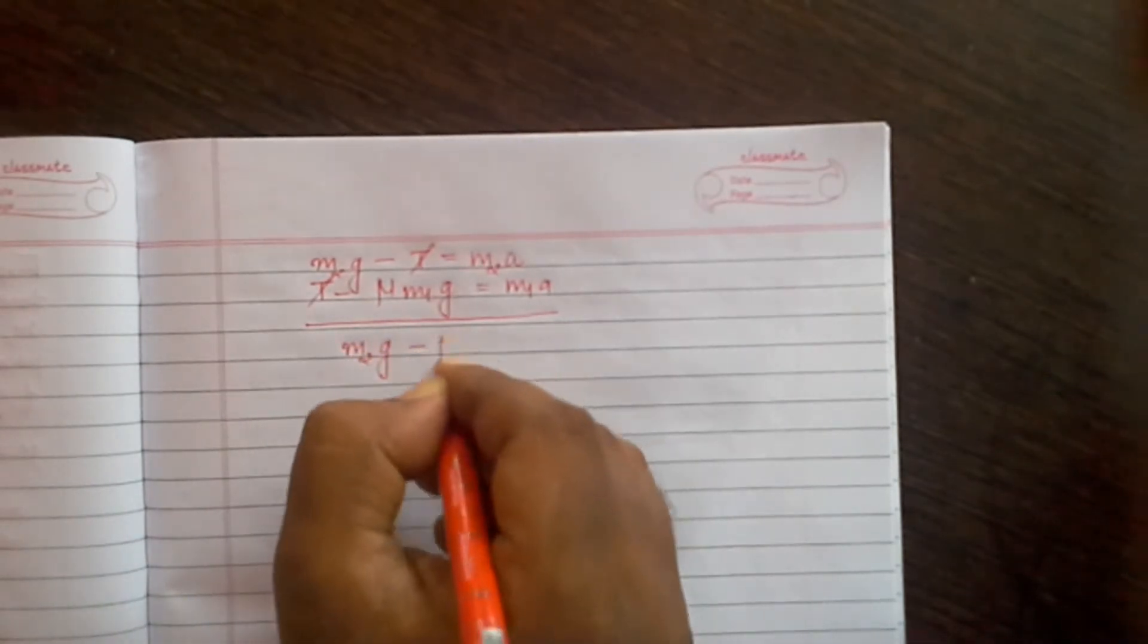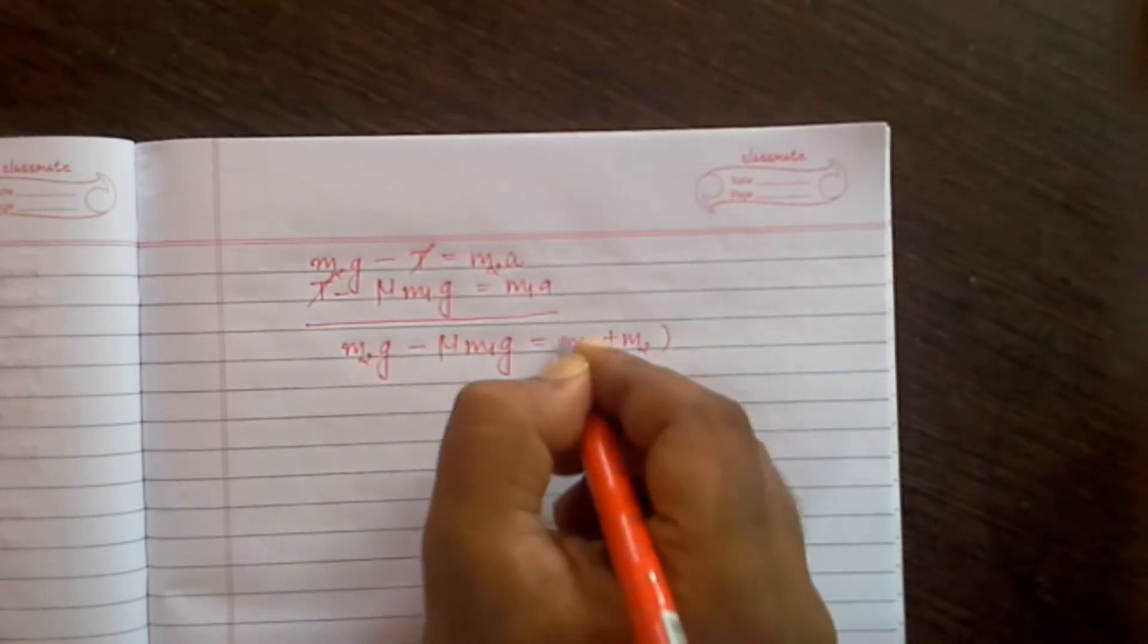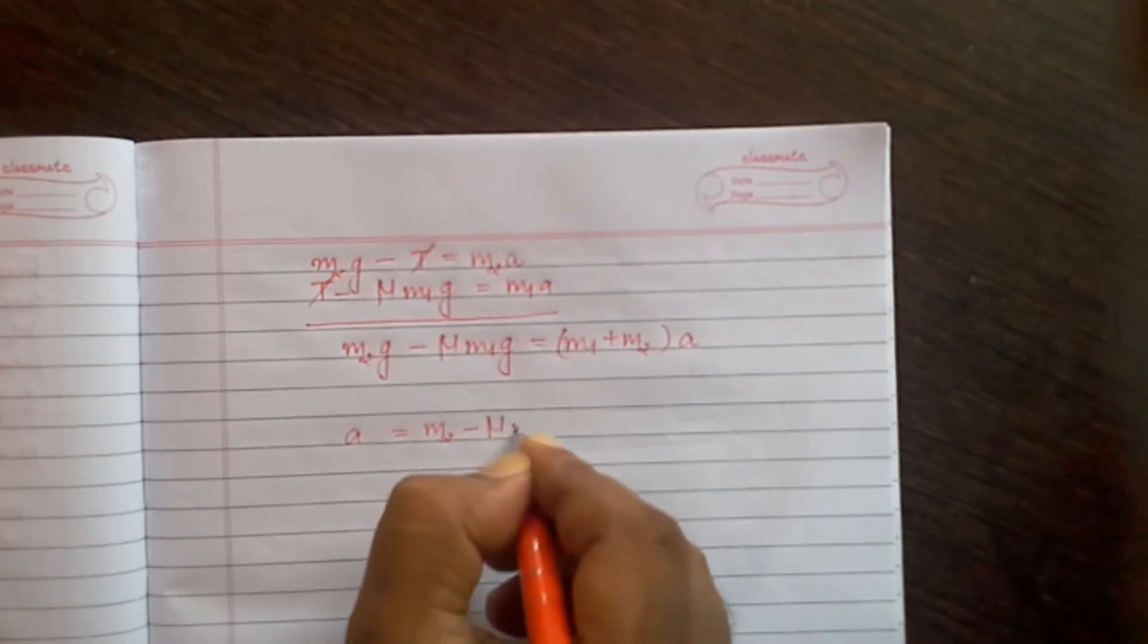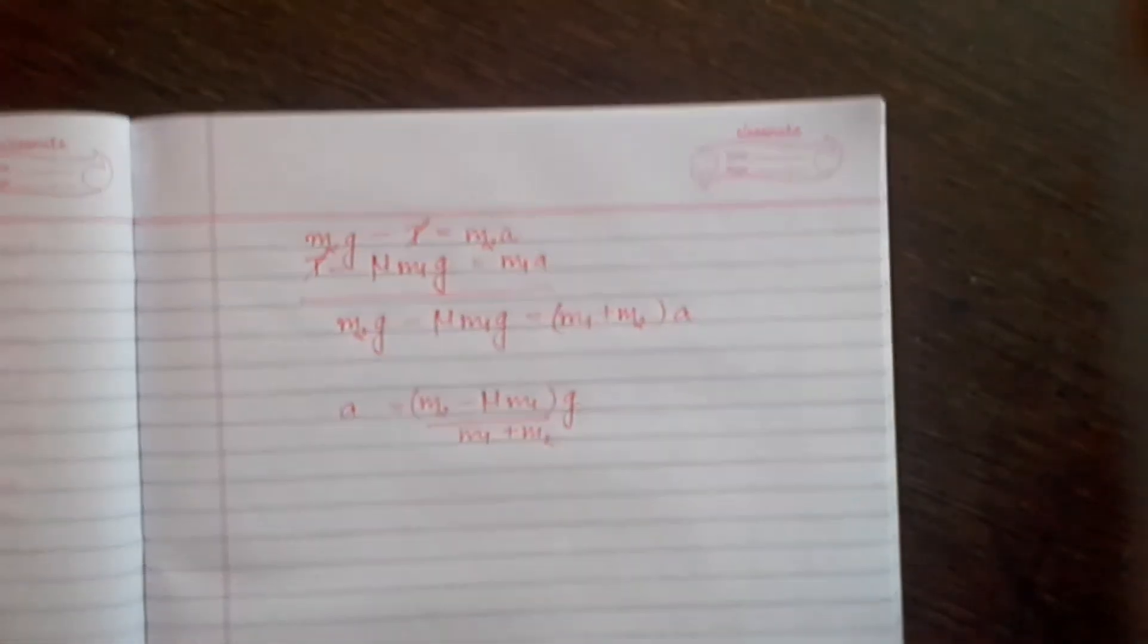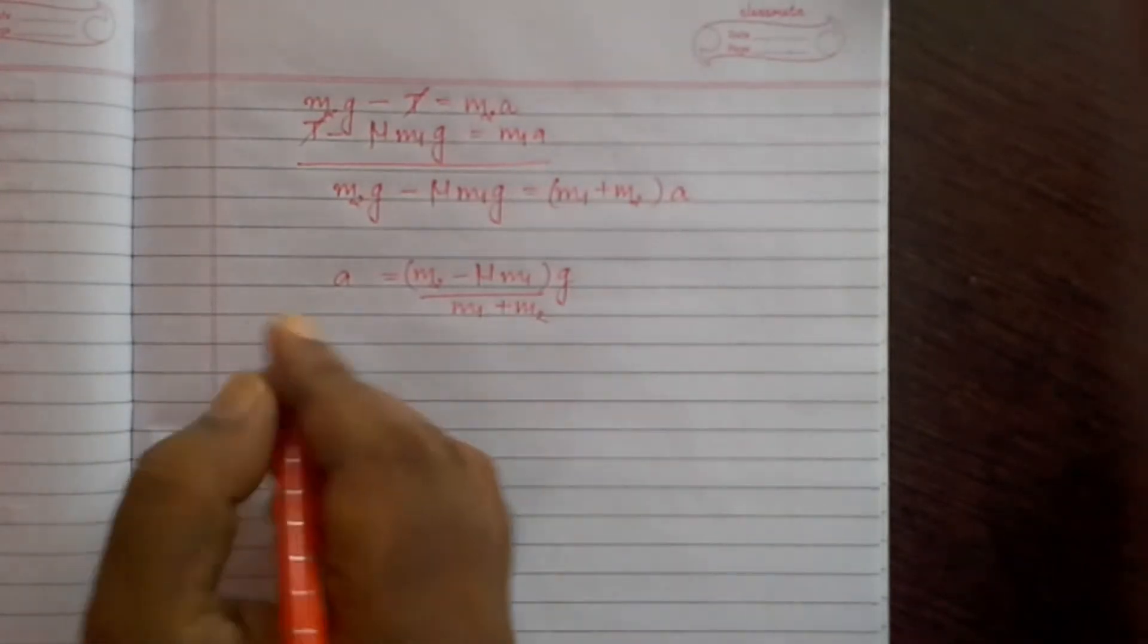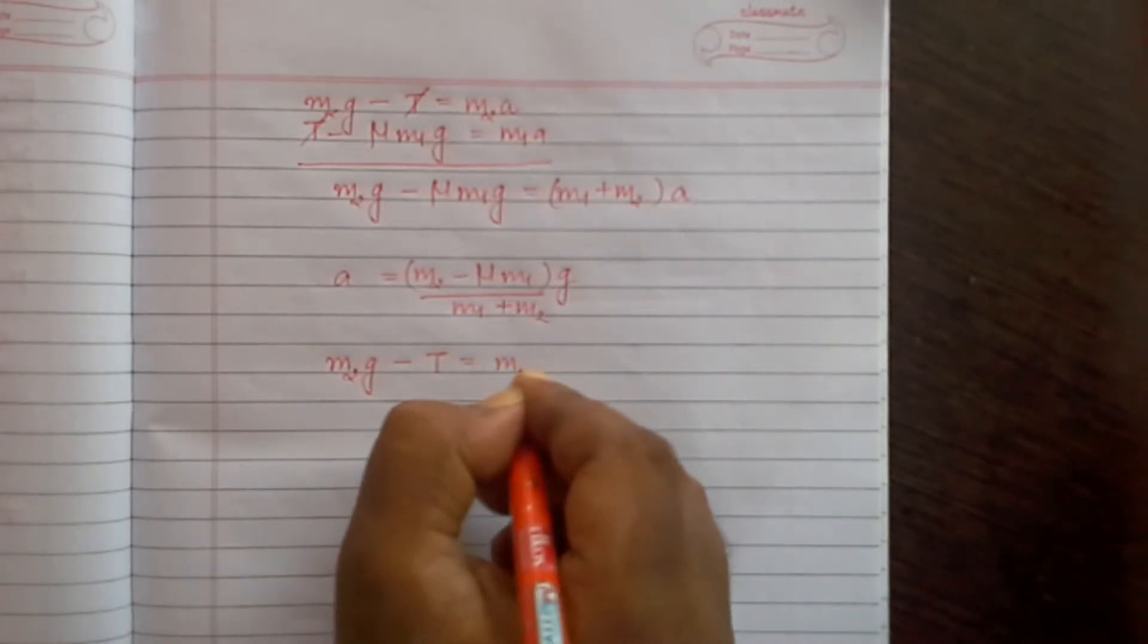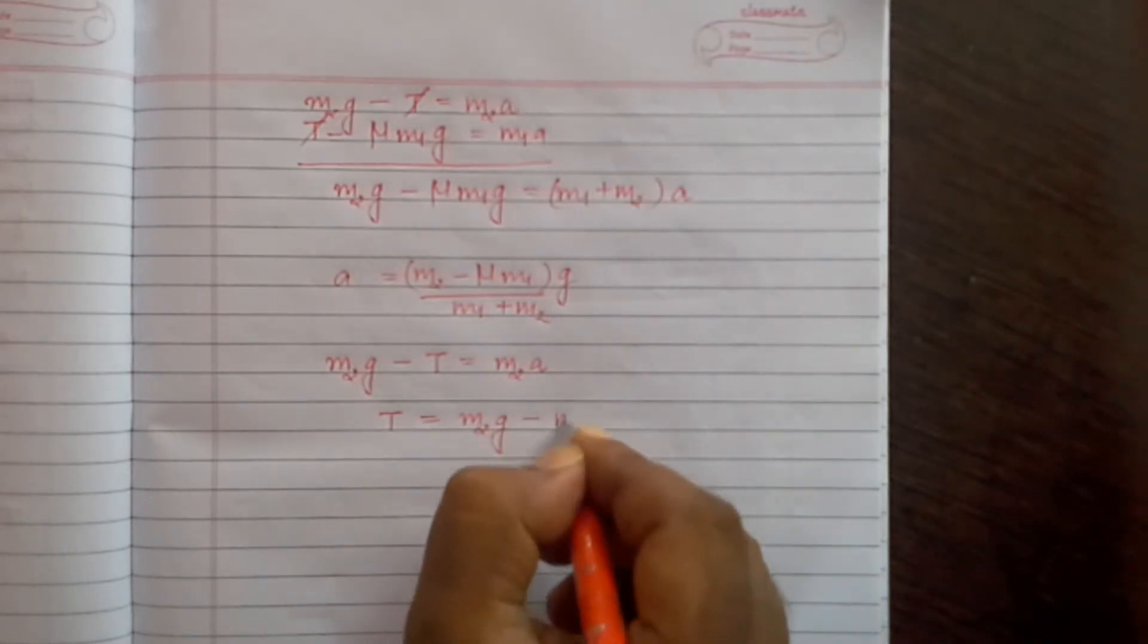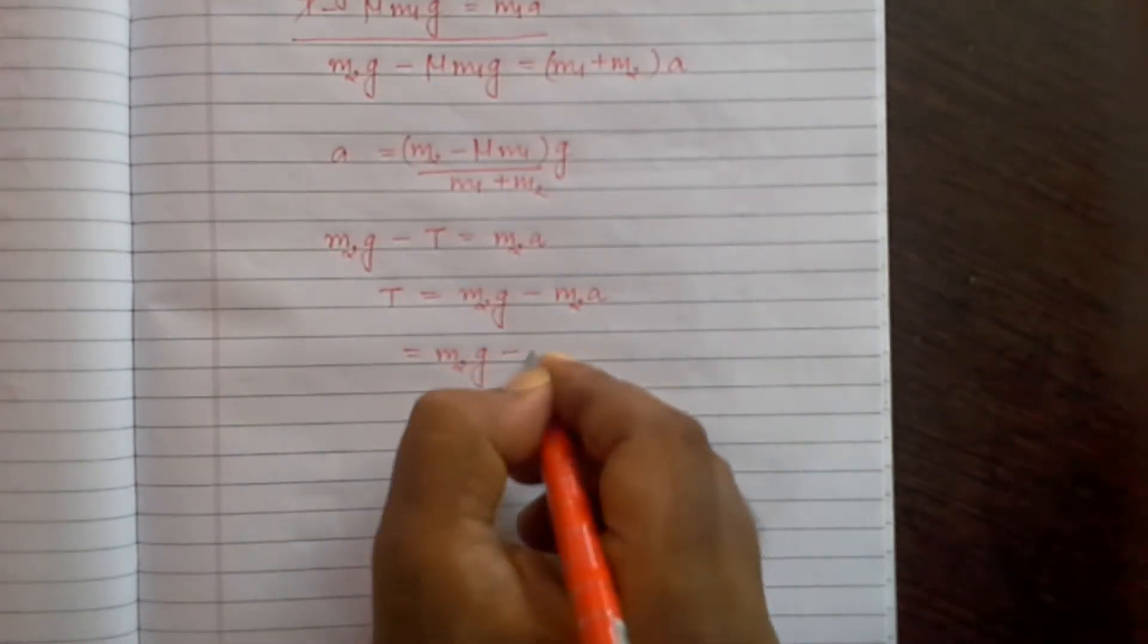Adding these, we get M2g minus mu times M1g is equal to M1 plus M2 times a. Or we can write a is equal to (M2 minus mu times M1) times g divided by (M1 plus M2).